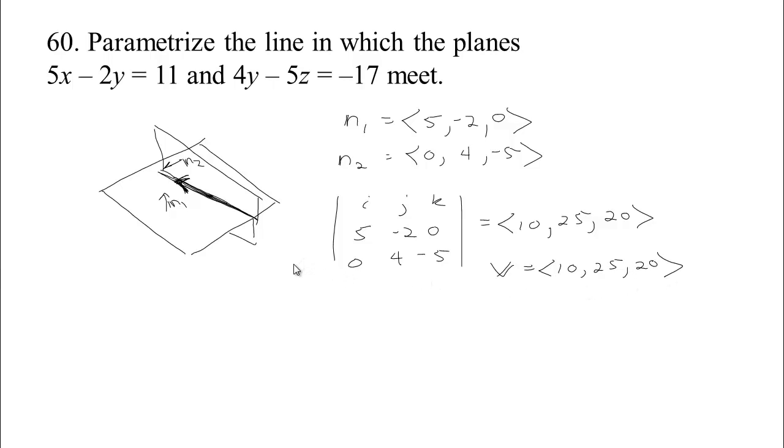And we just need now a point on the line. So we're going to have to find a point that lies on the line. It would have to satisfy both equations at once. This is a system of equations that we need to solve here. We have a system of equations that we need to solve. 5x minus 2y plus 0z equals 11, and then we have 4y minus 5z equals negative 17.